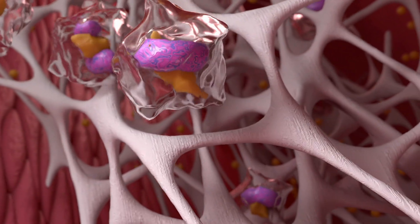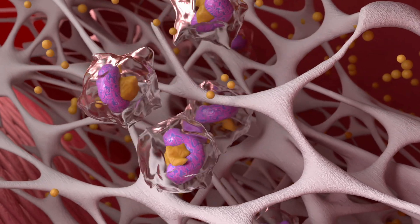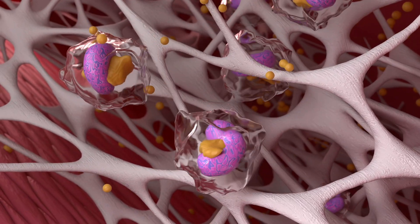Monocytes, which normally move freely in the bloodstream, migrate to the vessel wall and transform into macrophages, which begin to actively absorb cholesterol molecules.